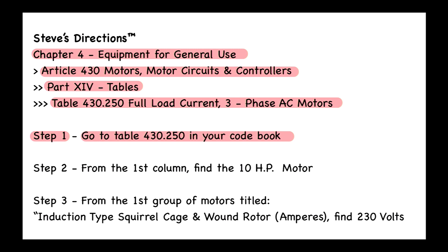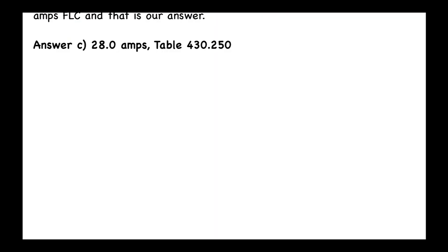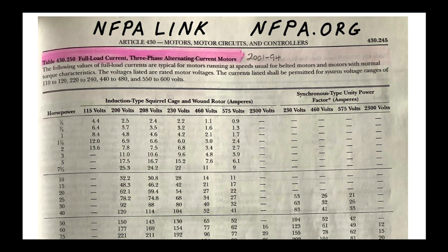Stop the video, grab your code book, and let's look at this table together. This is Table 430.250 — full load current, three-phase alternating current motors. I want to mention something called the NFPA Link — it's the code book on your cell phone. It's absolutely fantastic; you can search for things on the job. It's about ten dollars a month, and nfpa.org offers about a two-week free trial. We're not affiliated with the NFPA, but I think very highly of this app.